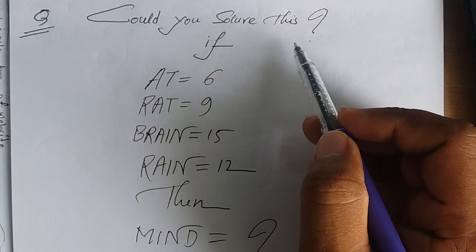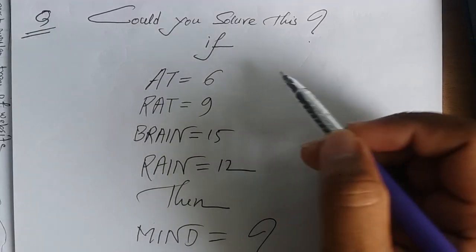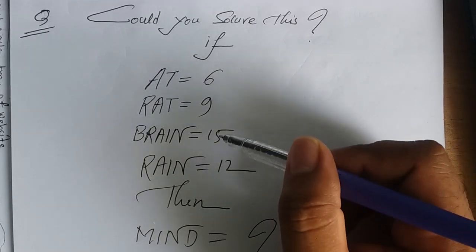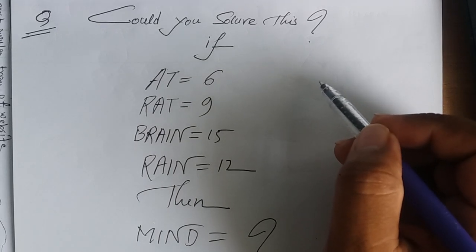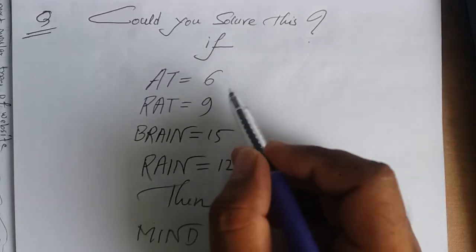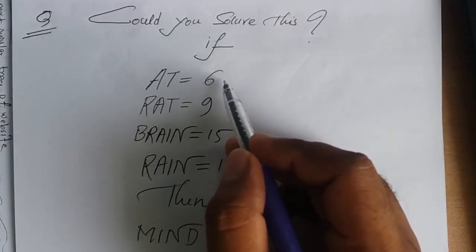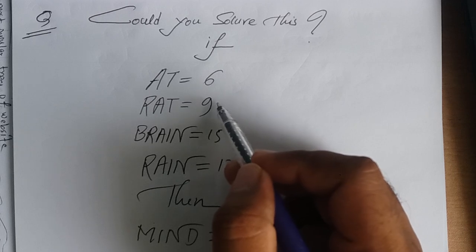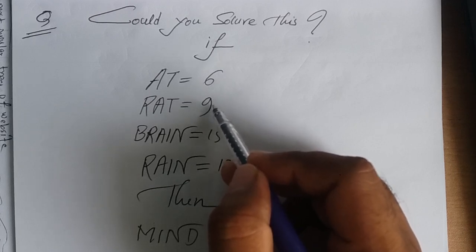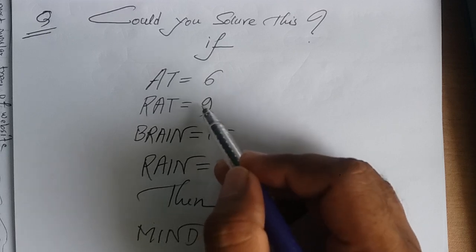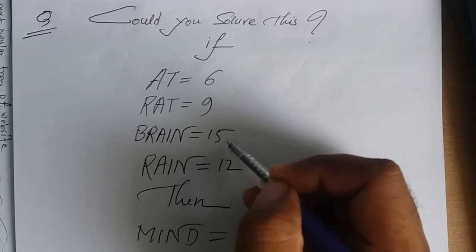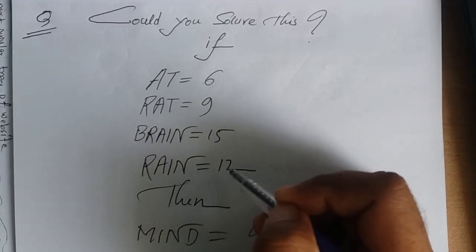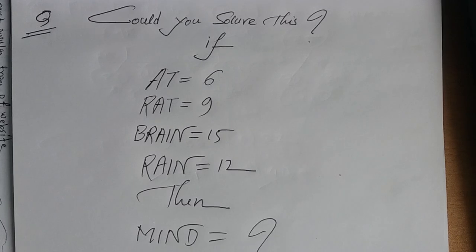Could you solve this? If AT equals 6, RAT equals 9, BRAIN equals 15... AT has 2 letters, multiply by 3 equals 6. RAT has 3 letters, multiply by 3 equals 9. BRAIN has 5 letters, multiply by 3 equals 15. RAIN has 4 letters, multiply by 3 equals 12. So there's a relationship - multiply the number of letters by 3.